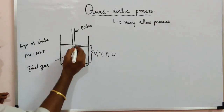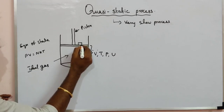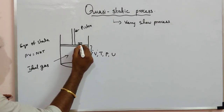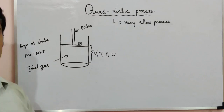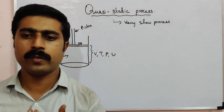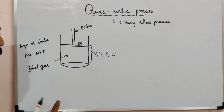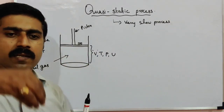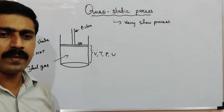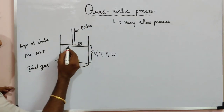Now, let us place a block of mass M — say 1 kg or 2 kg — on top of the piston. What happens? The piston suddenly moves downwards.